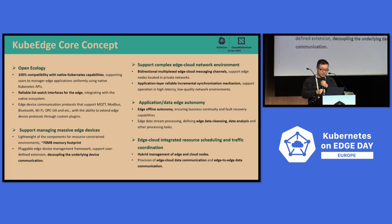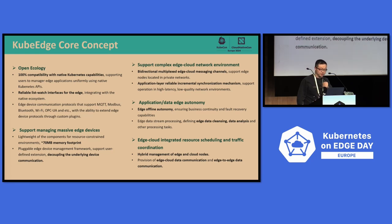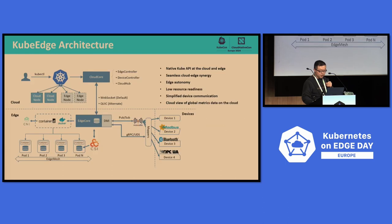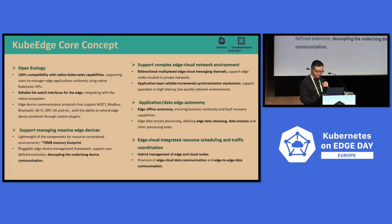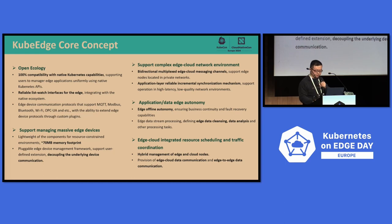The last core concept is edge-cloud integrated resource scheduling and traffic coordination. This means we can manage cloud nodes and edge nodes together, and schedule resources from cloud to edge.